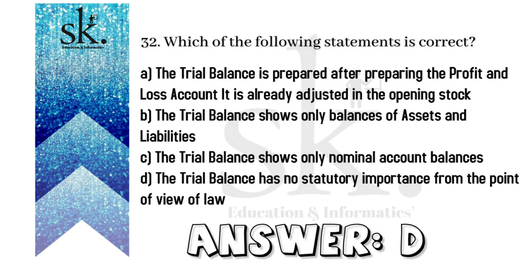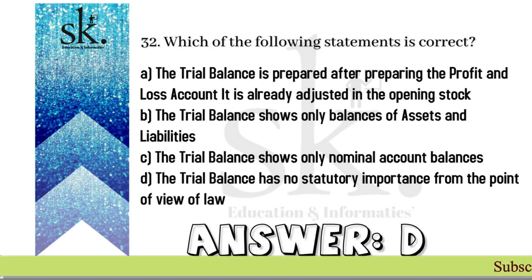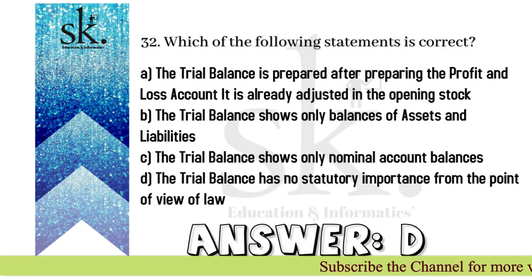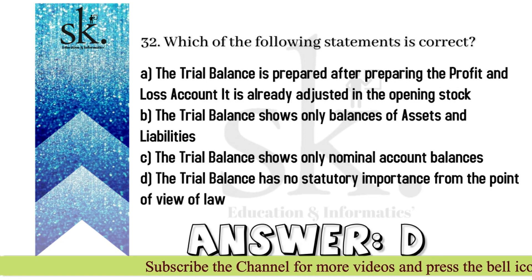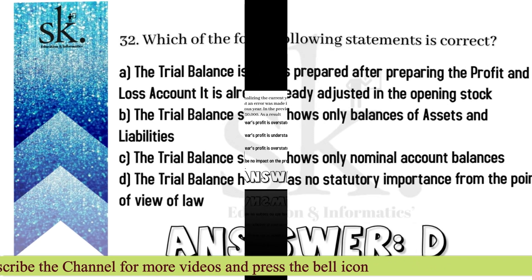The next question: which of the following statements is correct? The trial balance is prepared after preparing the profit and loss account — wrong, it's prepared before. The trial balance shows only balances of assets and liabilities — no, that's the balance sheet. The trial balance shows only nominal account balances — no, personal and real account balances are also shown. D: the trial balance has no statutory importance from the point of view of law — this is correct. The answer is D.